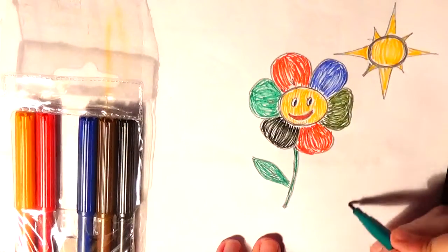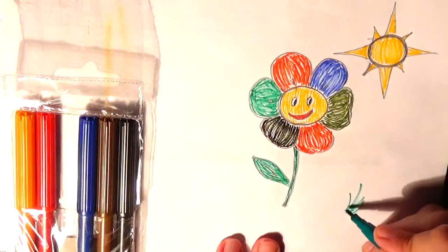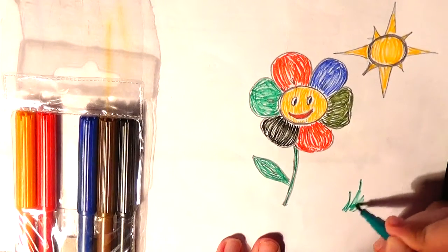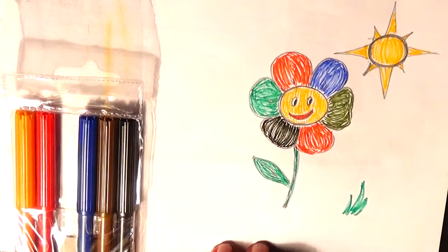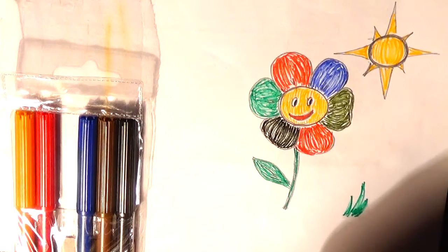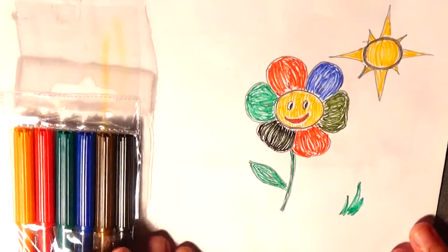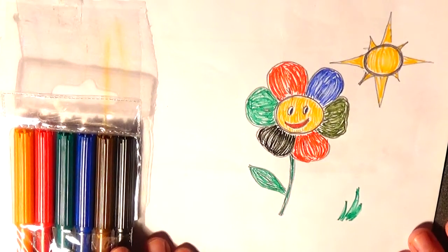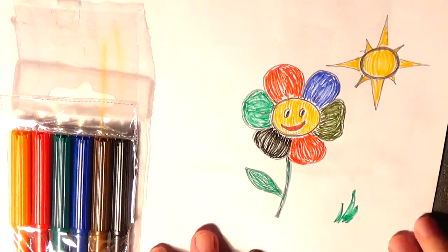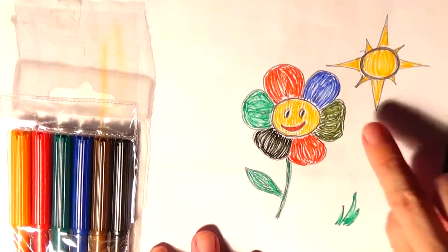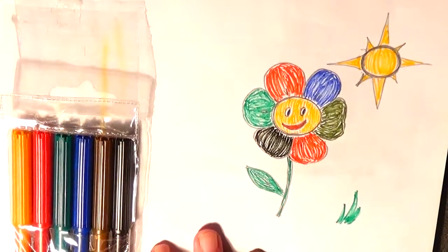Some grass on the ground and here, in this corner, a bit of grass. Like this. Well, I hope you like the drawing. I hope it is symmetrical, both the sun and the flower.